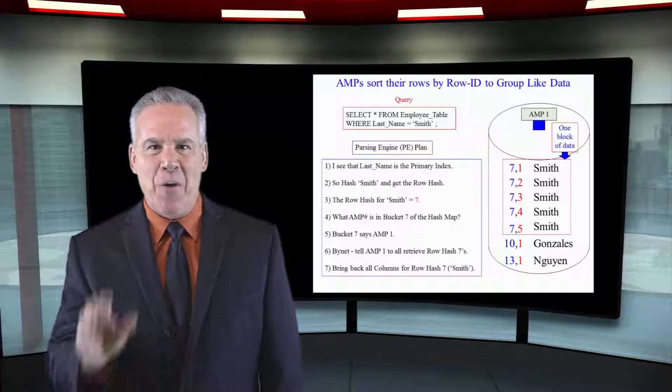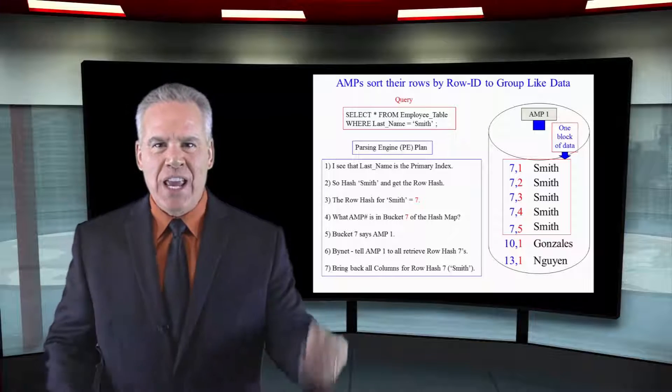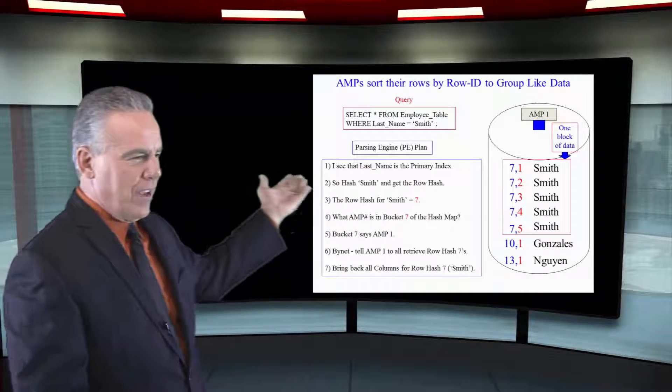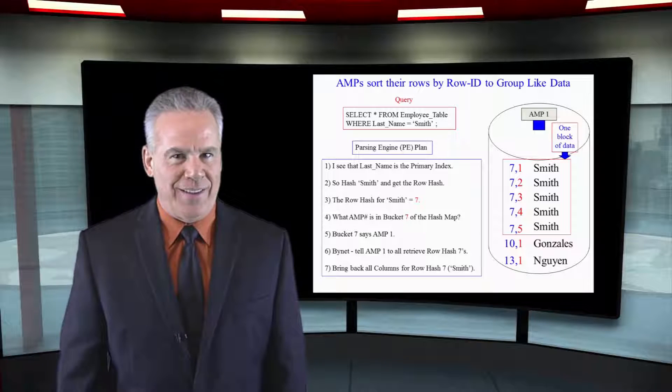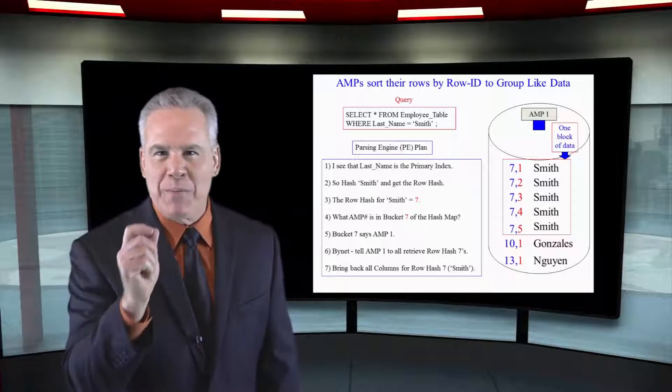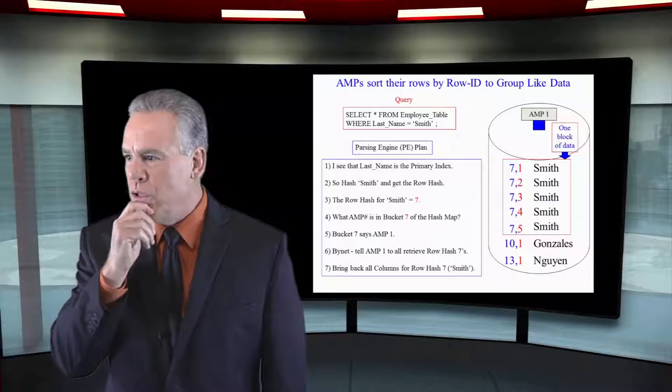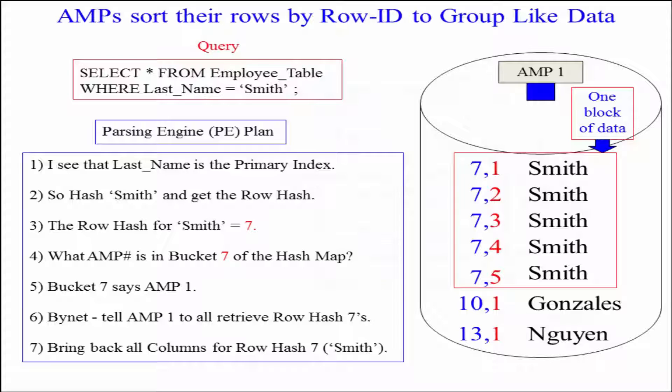You're going to see this almost in slow motion. Here's the query: select everything from the employee table where the last name is equal to Smith. The parsing engine is going to come up with a great plan and it says, oh goodness, last name is the primary index of this table.